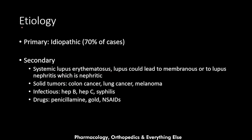Now let's talk about the etiology. There are two types: primary and secondary. The primary type is idiopathic and accounts for 70% of cases. The secondary type is secondary to many different conditions, the first being systemic lupus erythematosus. Lupus can lead to membranous in some cases, and in other cases it leads to lupus nephritis, which is a nephritic syndrome type disorder.